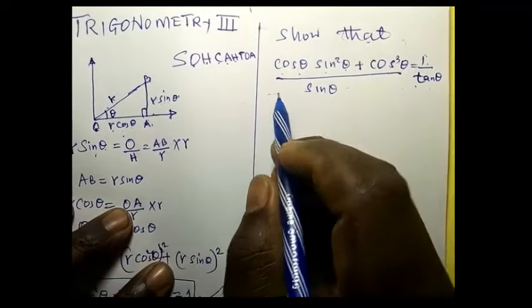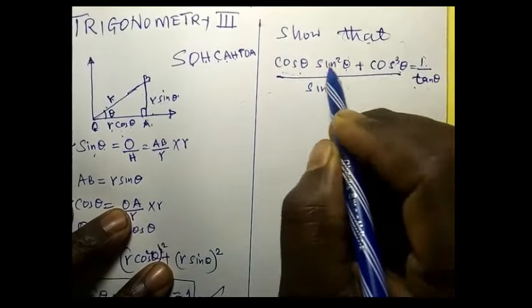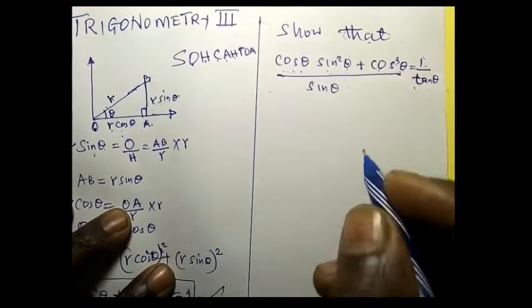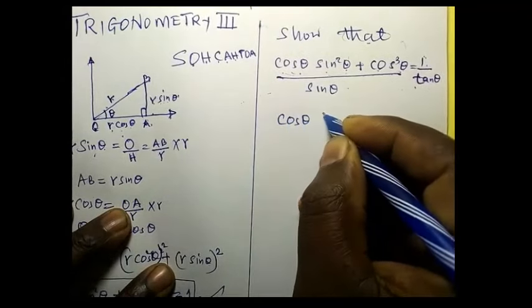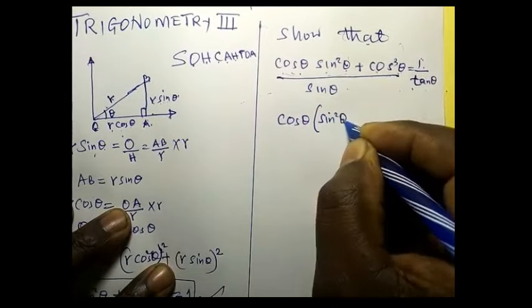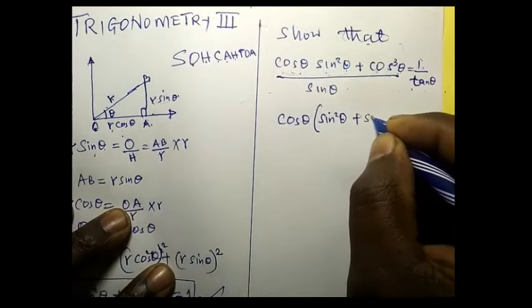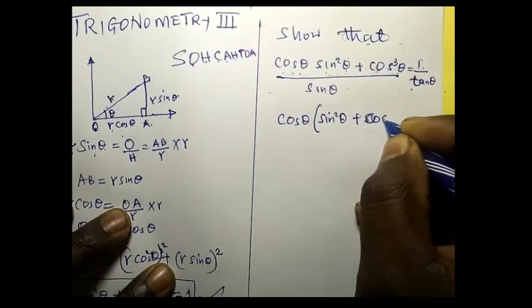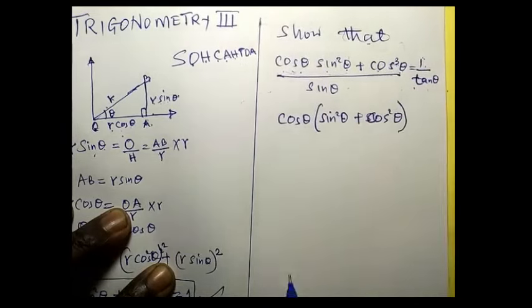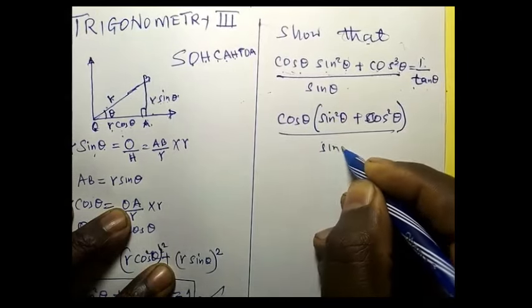Let us start with the numerator. You can see we have cos here. This is one term, the first term and the second term. But cos is common. So what do we do? Let us put the factors together from the numerator. So we say that cos theta will be equal to sine square theta plus cos square theta, because we will factor out this one, divided by sine theta.